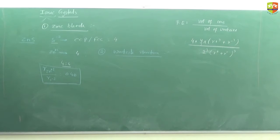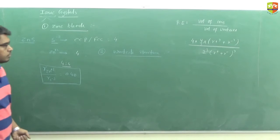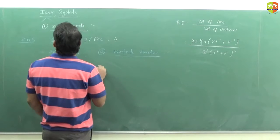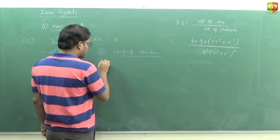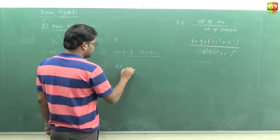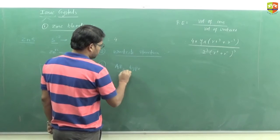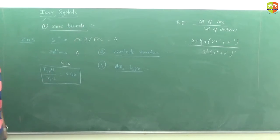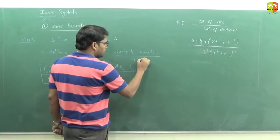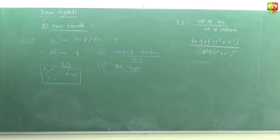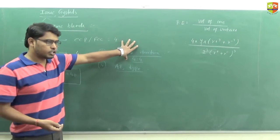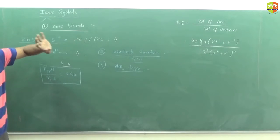Next, write down the structure of ionic compounds - the fourth one. The structure of ionic compounds of AB₂ type. Everything for the HCP arrangement is the same, like the 4:4 arrangement. For this also, just 4:4 arrangement. The only difference is it has HCP arrangement here, or CCP arrangement there.